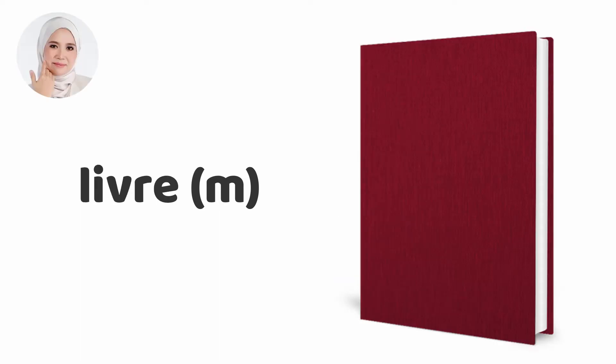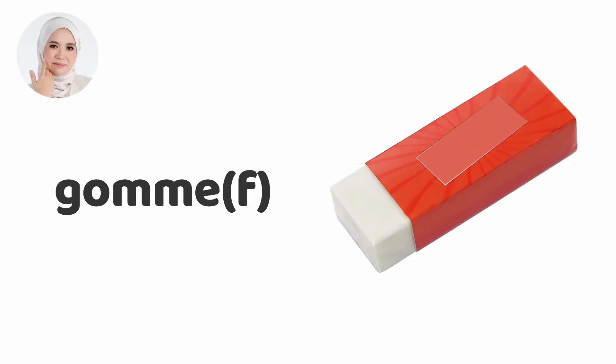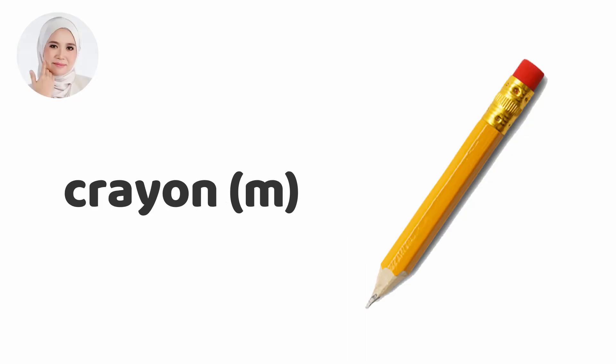Livre — it's also masculine. Sac means bag and livre means a book. Next you have gomme. Eraser is feminine — a feminine noun. Next you have crayon. Crayon is a pencil and crayon is a masculine noun as well.